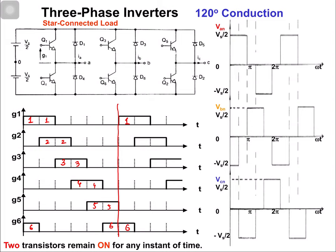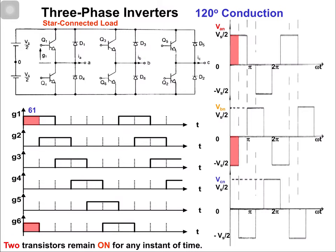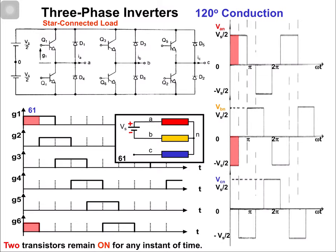In 180 degree conduction three switches were on, but in 120 degree conduction two switches are on at any instant. In the first switching state 6 and 1: because of switch 6, phase B is connected with the negative terminal. Because of switch 1, phase A is connected with the positive terminal. Phase C is disconnected — neither switch 5 nor switch 2 is on — so this arm is in the floating state.